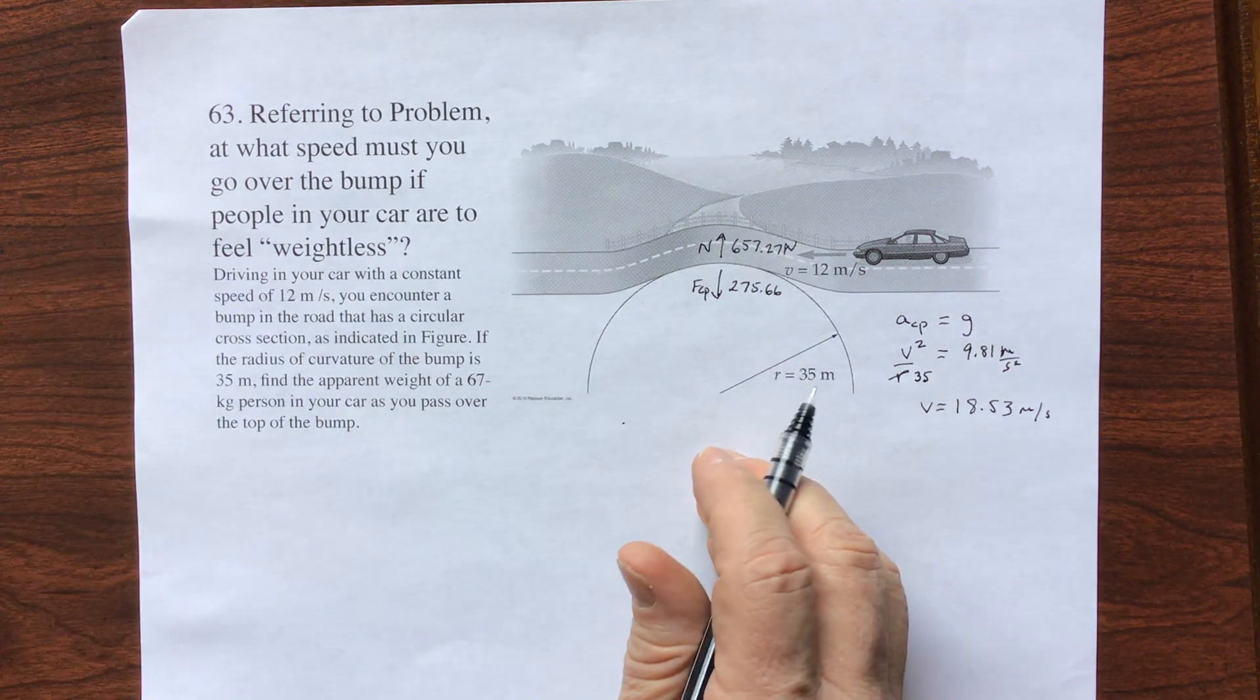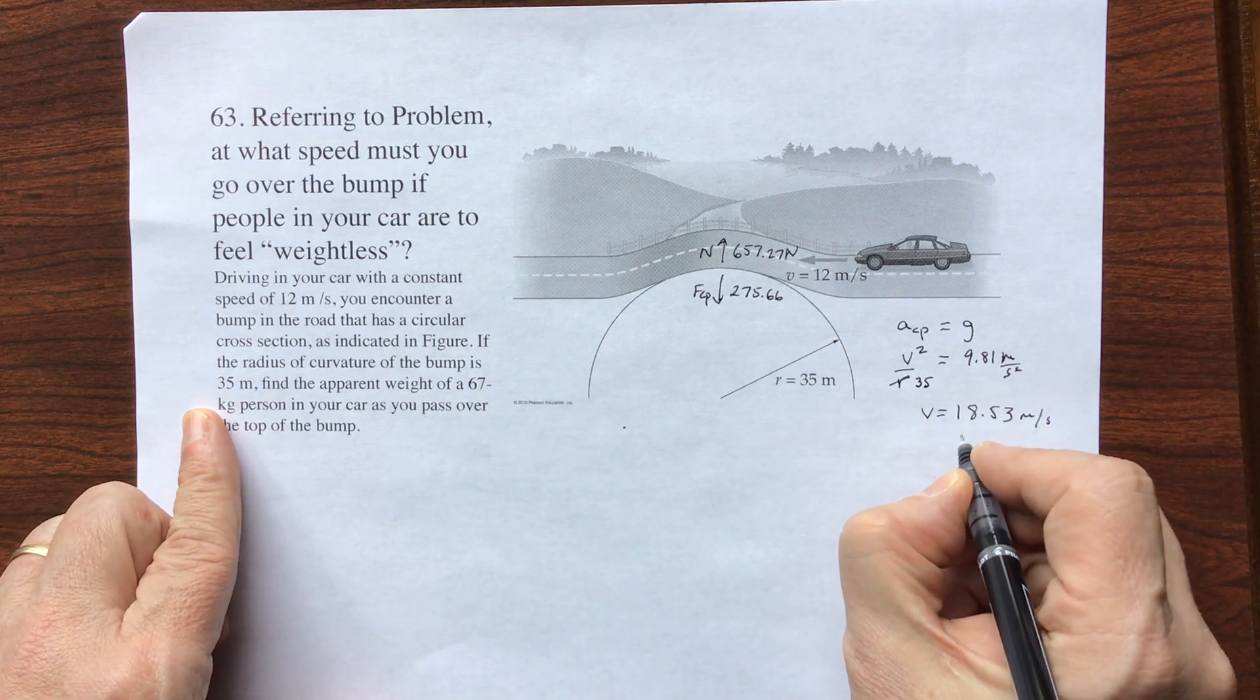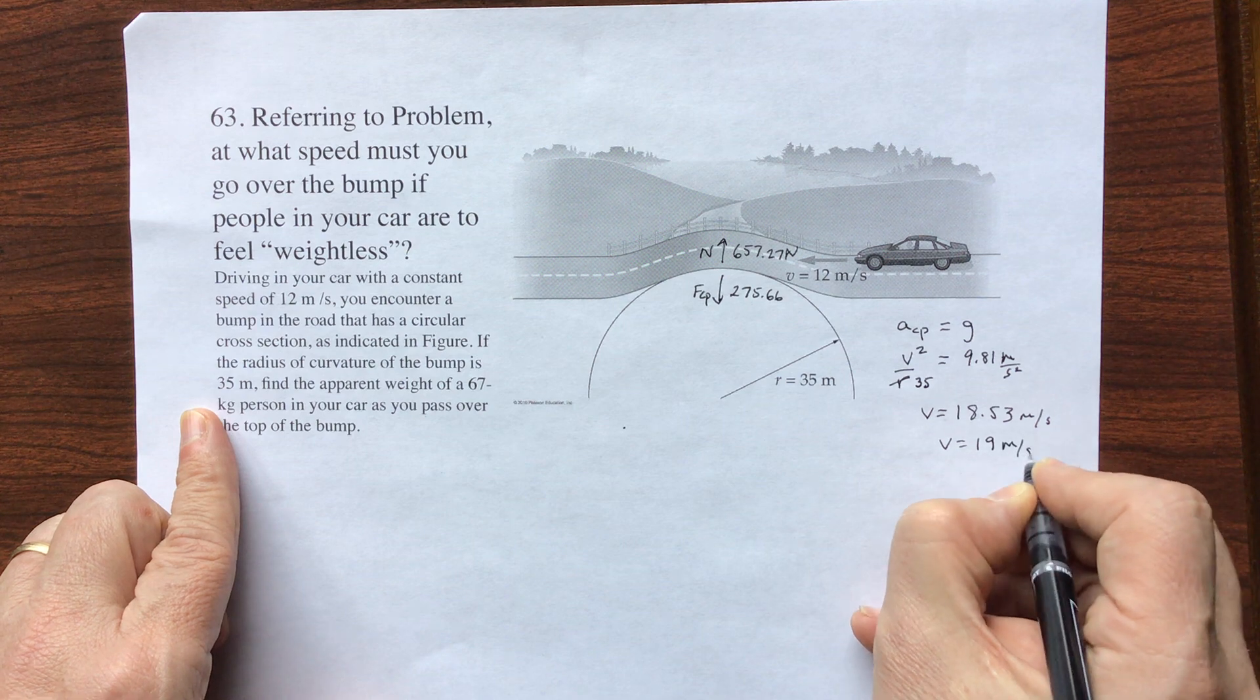And we have two significant digits everywhere. So this is going to be your velocity has to be 19 meters per second.